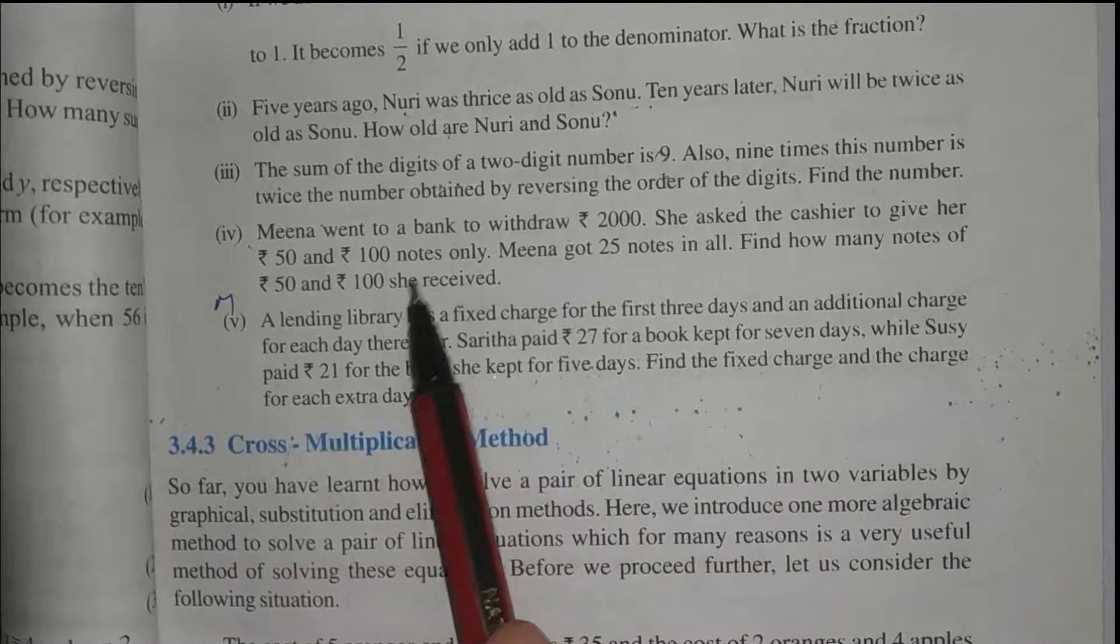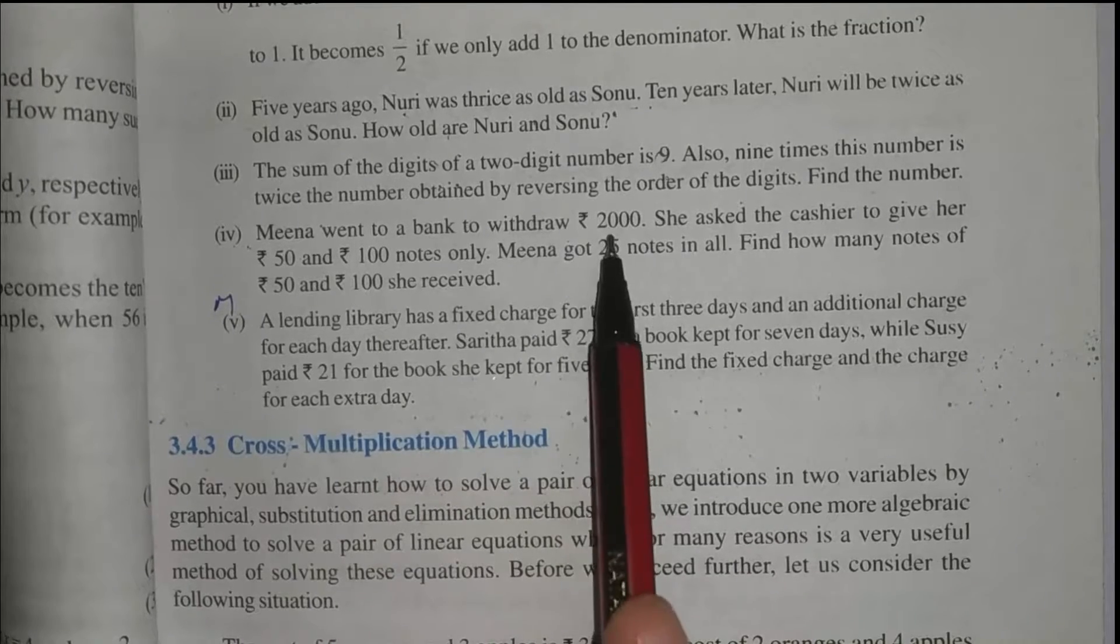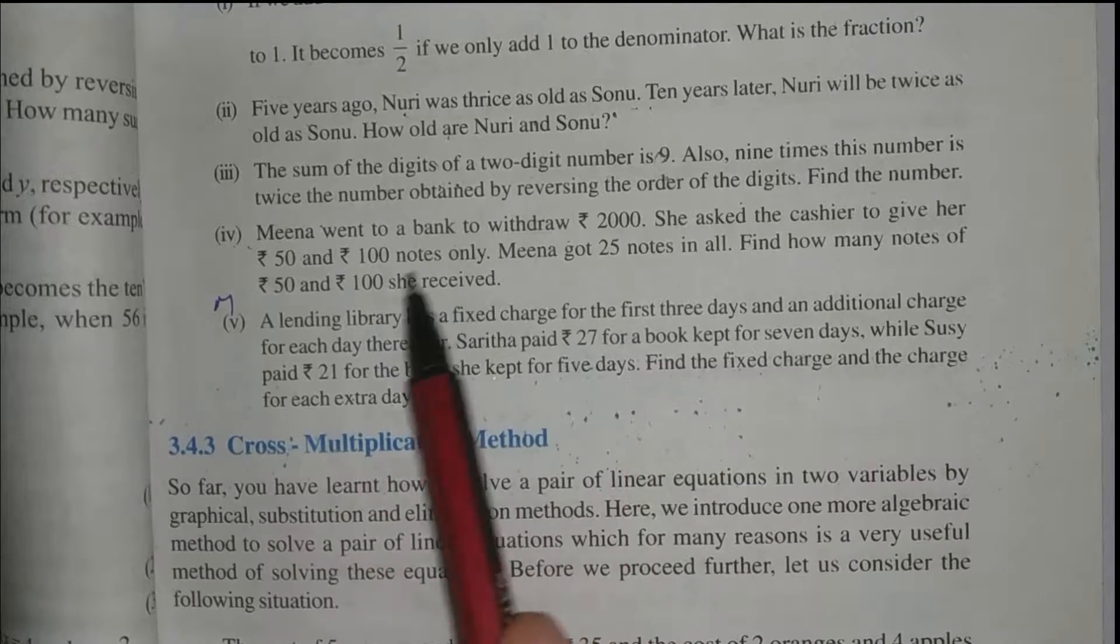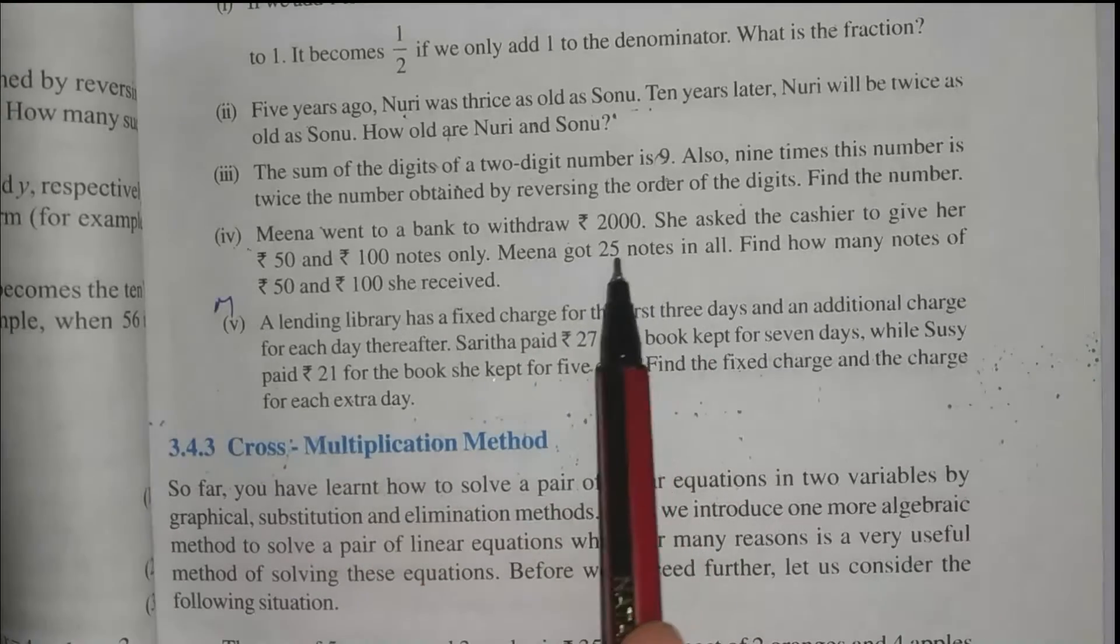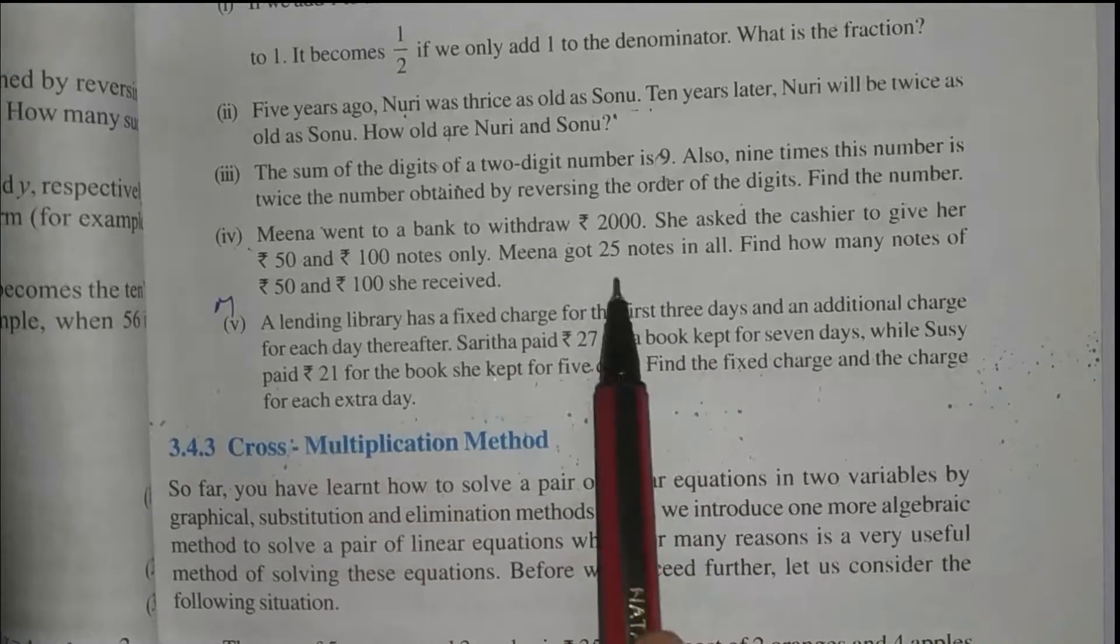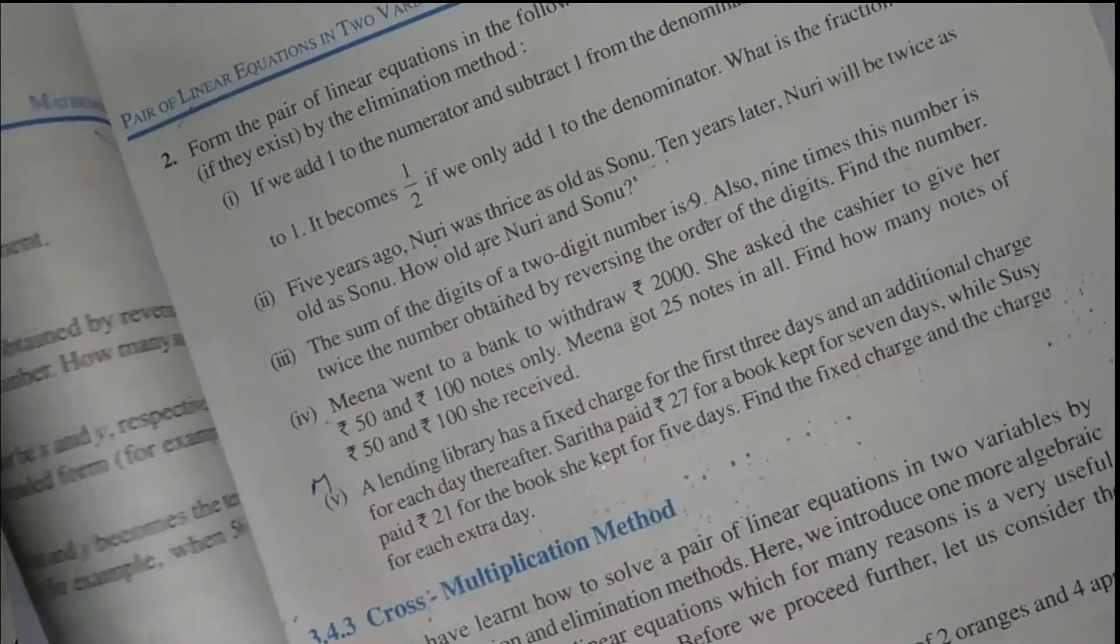So suppose Meena ja raha hoon, 2000 rupees nikaalne ke liye. Usne bola ki mujhe sirf 50 aur 100 ke notes chahiye. Aur koi note nahi chahiye mujhe. Aur usko total 25 notes mili hai. Hamne find karna ki 50 aur 100 wale kitne notes hai. So very easy and interesting. So sabse pehle 50 and 100 wale notes ko suppose kar lete hai. Kya suppose karenge? Kis se suppose karenge? Simply solve karenge.